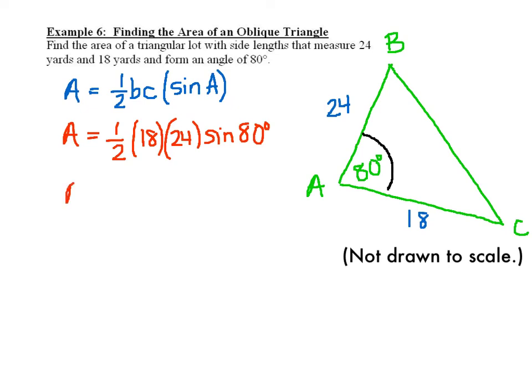And when you do that, you find out that your area ends up becoming 212.7 meters. And that is how you find the area of an oblique triangle.